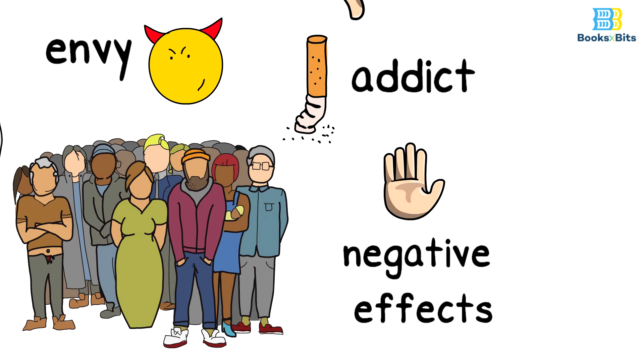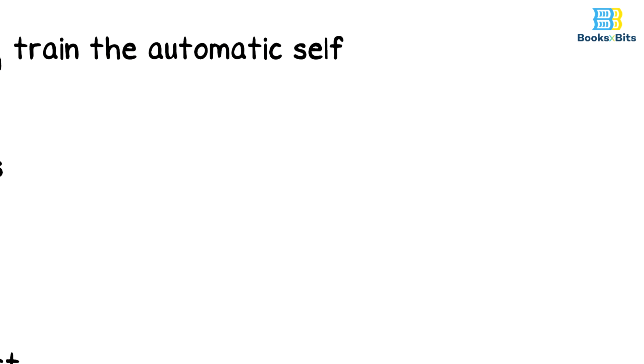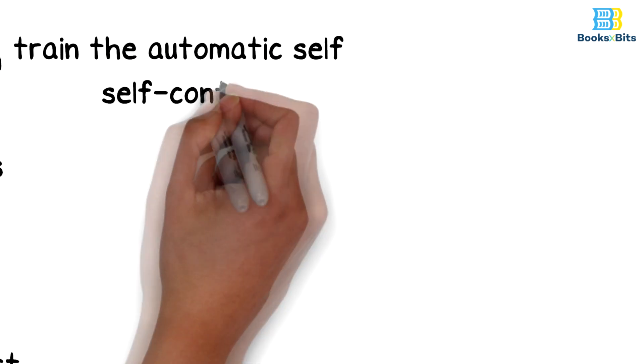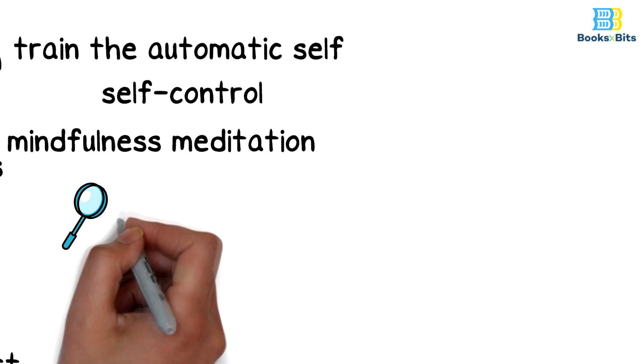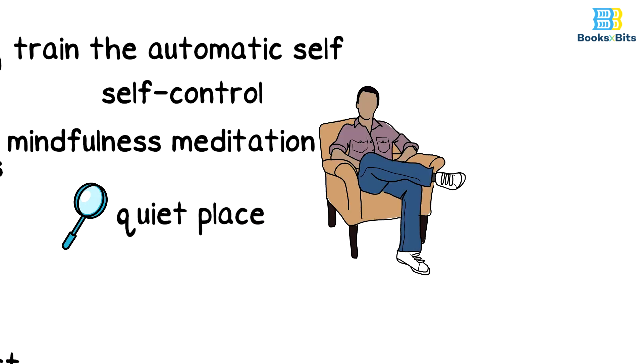To solve this dilemma, you should train the automatic self, as we mentioned, to exercise self-control. The exercise is called mindfulness meditation. The exercise steps are as follows: first, find a quiet place to sit in a comfortable position, upright.